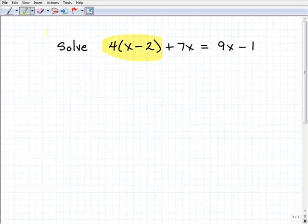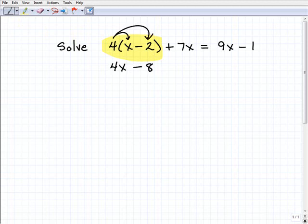Right here is one of those situations. I'm going to apply the distributive property and distribute that 4. This is going to be 4 times x, which is 4x, minus 4 times 2, which is 8, plus 7x equals 9x minus 1.